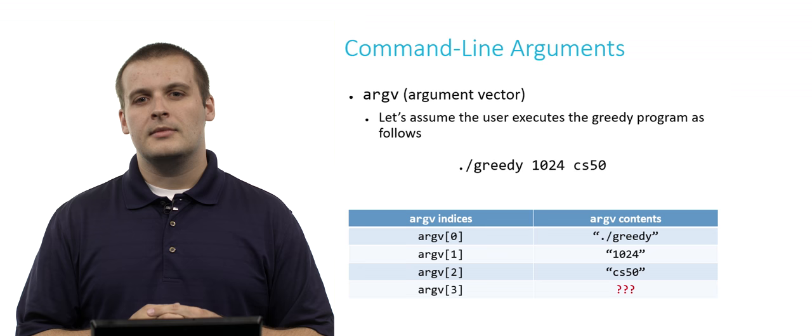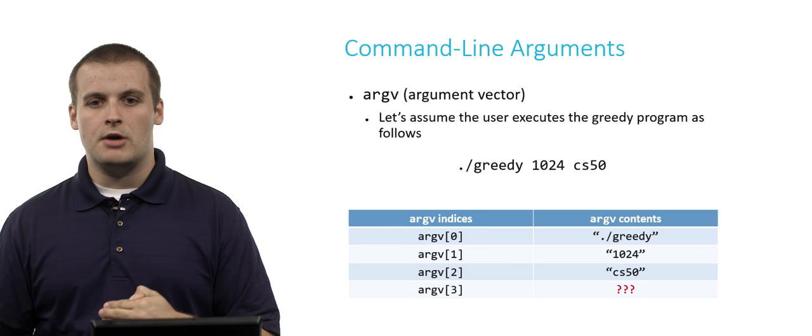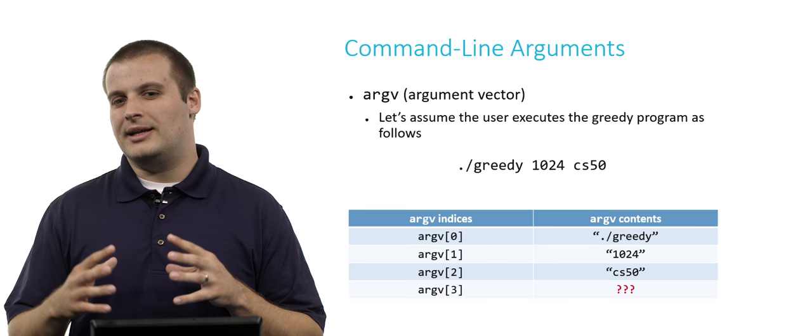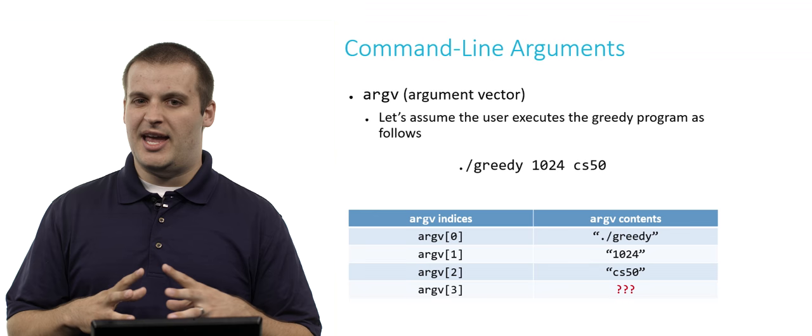Well, again, we don't really know, right? We have an array of size 3. That's how many elements the user typed at the command line. So if we go to argv 3, we're now overstepping the bounds of our array. The compiler will let us do this. There's no intuitive problem with it. But in terms of actually what's going to happen, we don't really know. It depends on what is located at the memory where argv 3 would be expected to be.